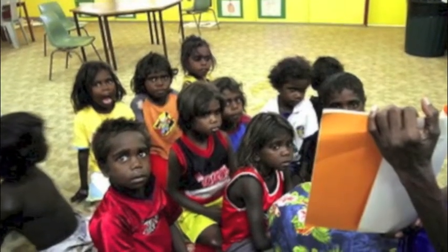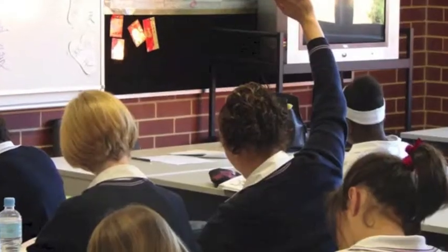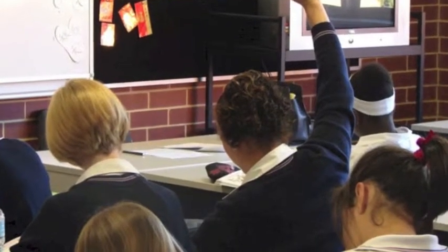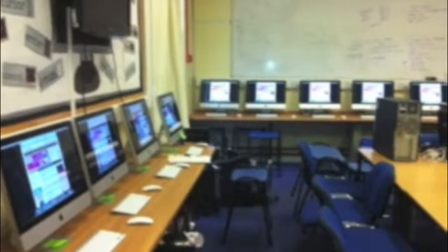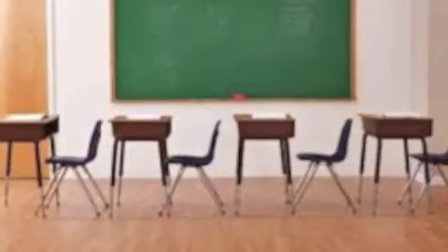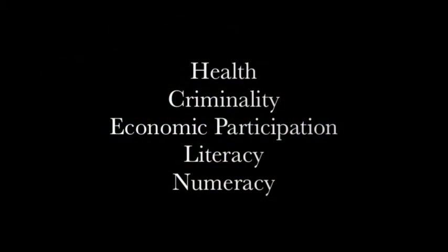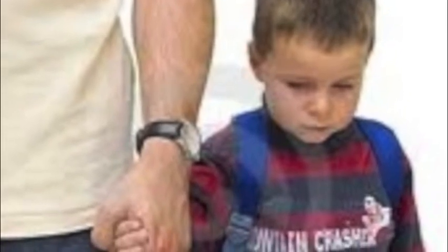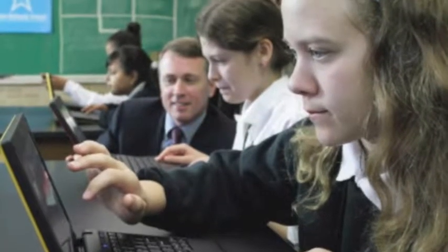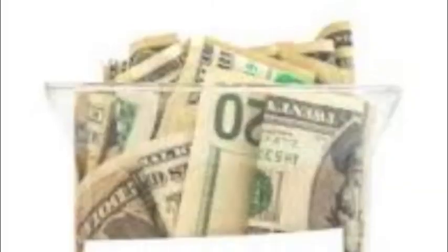An issue that results from children from lower socioeconomic backgrounds is that they also have less access to information and communication technologies that would assist in their learning. This contributes to lower educational attainment, which has implications including health, criminality, economic participation, literacy and numeracy, affecting their overall quality of life. This lower level of educational attainment results in an ongoing cycle throughout the generations of the family, as their level of education is constantly affected by their economic background.